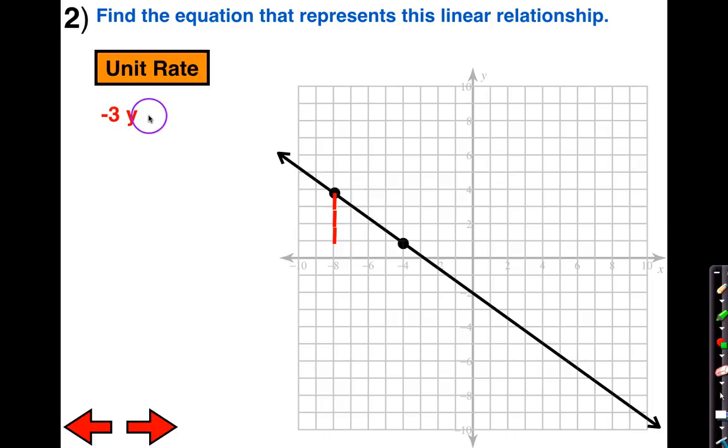Let's compare it to what's happening in terms of x. It's going over 1, 2, 3, 4x. So I'm going to say negative 3y per 4x.